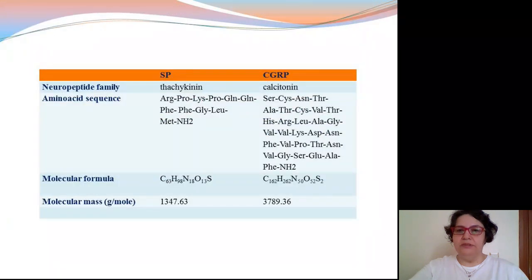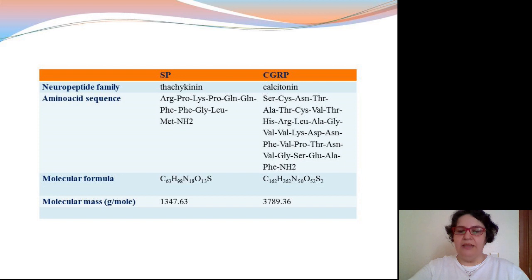Substance P and CGRP are neuropeptides that belong to the tachykinin and calcitonin family. They play an important role in neuropathic pain development and regulation.